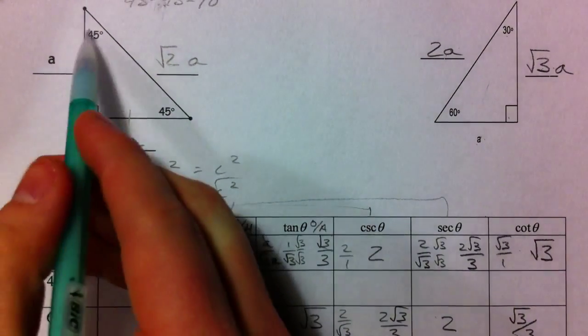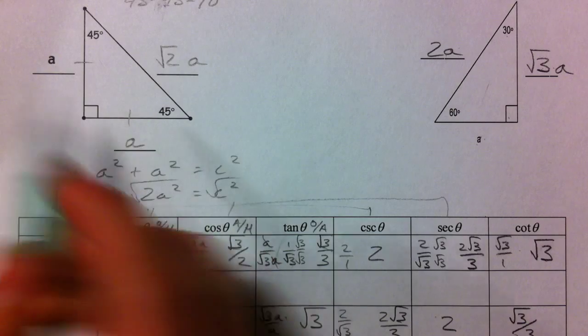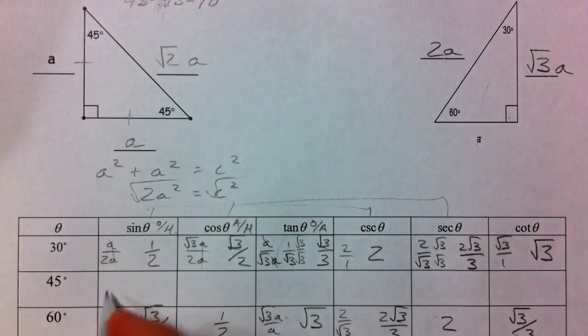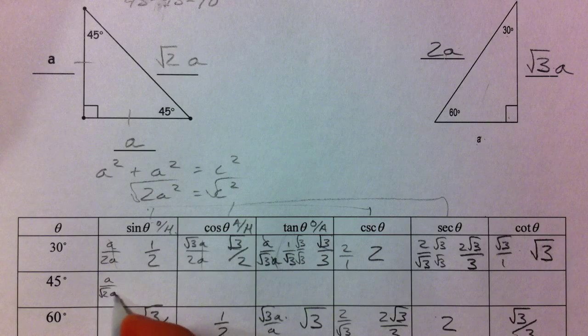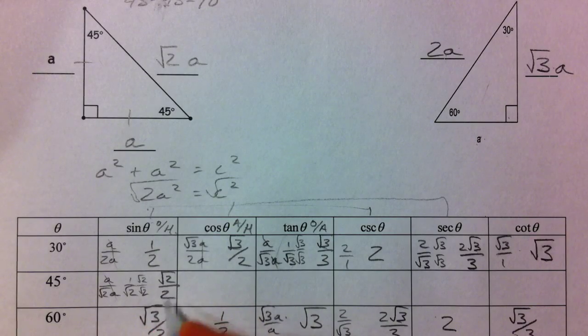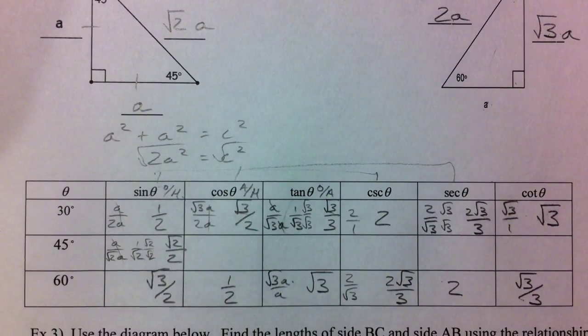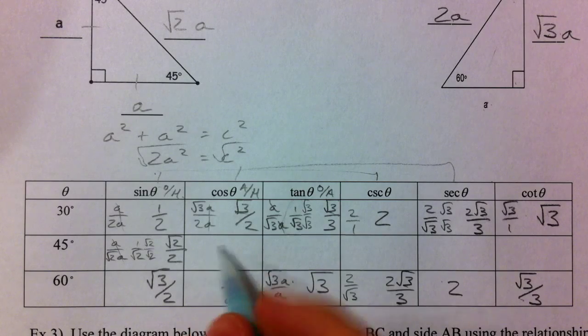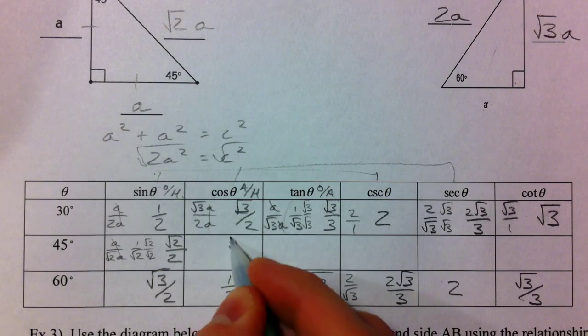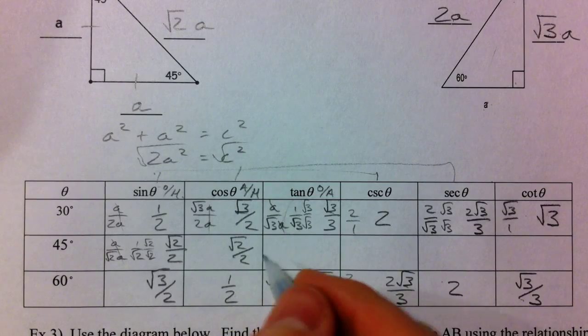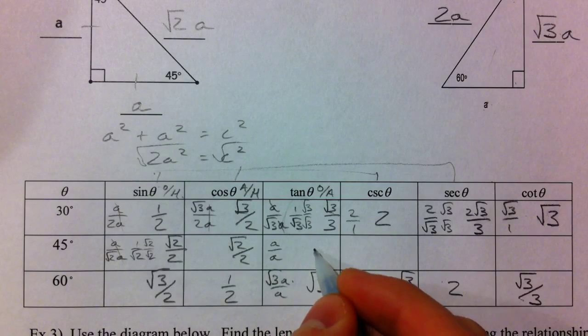Now on to the 45, 45, 90. You can use either one of these because the adjacent side and the opposite side are going to be the same. And so sine is the opposite over hypotenuse. A over root 2 of A. A's cancel out. You get 1 over root 2. Root 2 over root 2. And so the final answer is root 2 over 2. Cosine. Same exact deal. Root 2 over 2. The sine and the cosine are the exact same thing for the 45 degree angle. The tangent. Opposite over adjacent. A over A. Equal to 1.